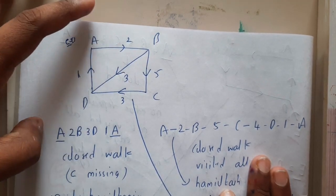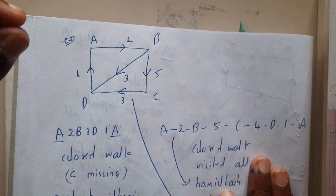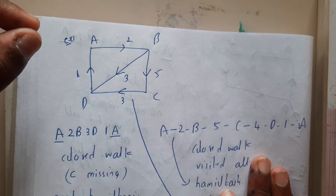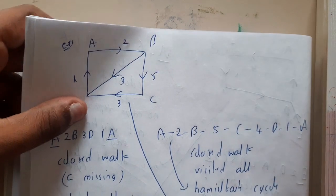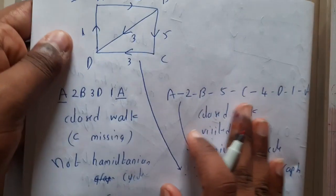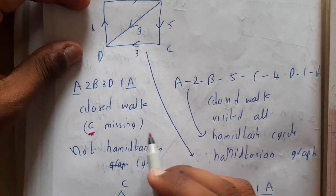This is a loop but you did not visit each and every vertex. You should visit each and every vertex. C is missing - we did not visit C in this situation, so this is not a Hamiltonian cycle.